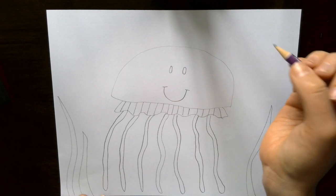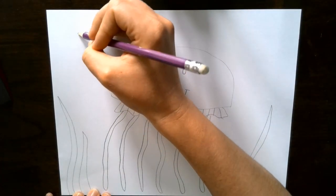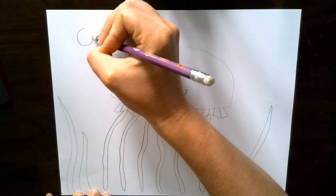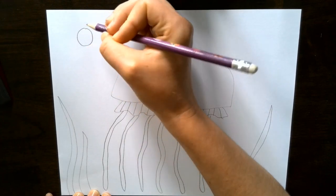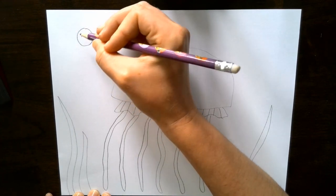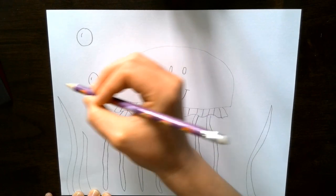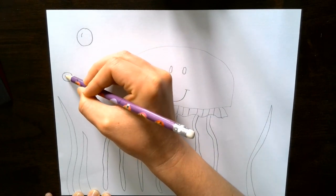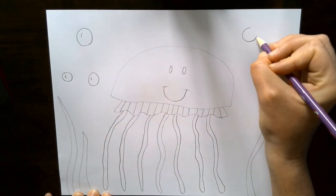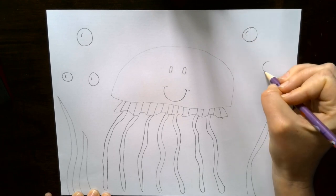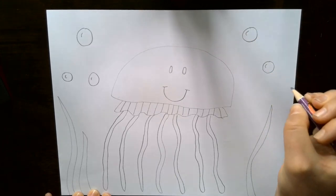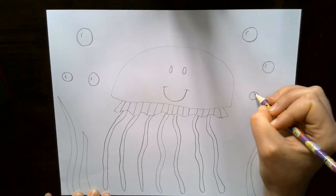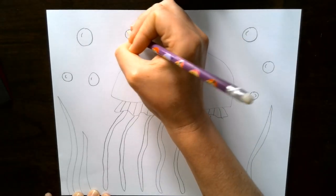I'm also going to add some bubbles in the water. Often there's little bubbles underwater just from all of the life under there. So I'll do some circles of different sizes. When I do bubbles, I like to add a little curved line in the corner. And that just kind of makes them look a little bit shiny or a bit more realistic. So fill it in. Maybe you'd even like to do some fish or other ocean creatures under there with your jellyfish.